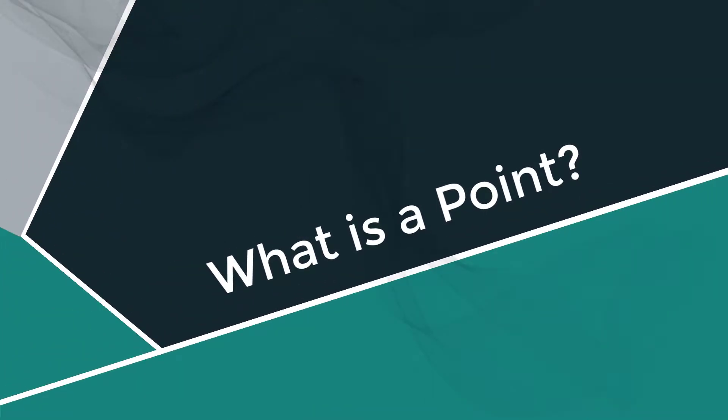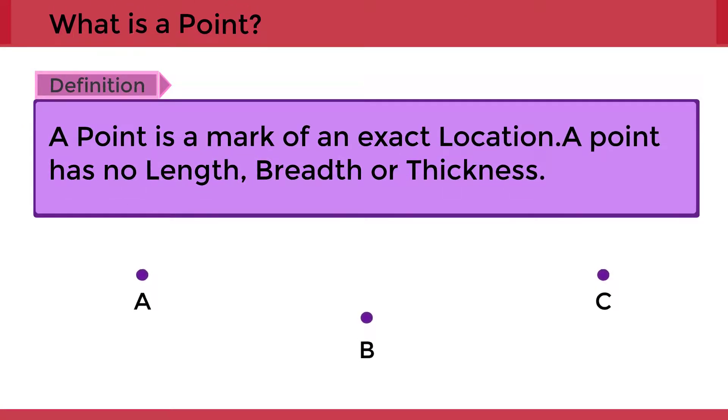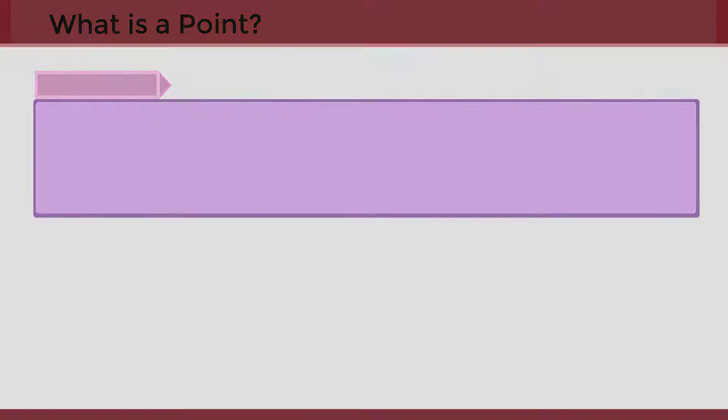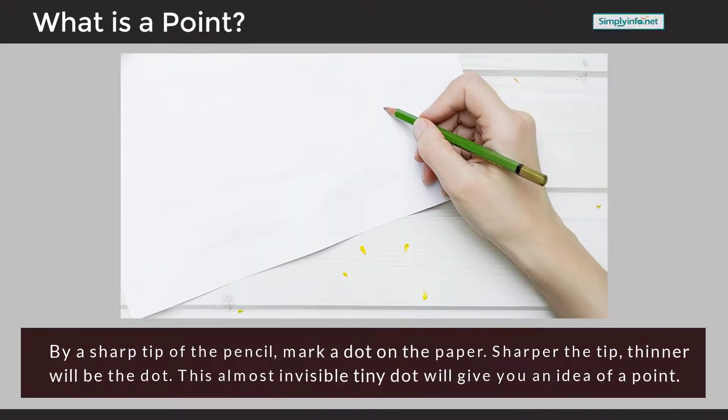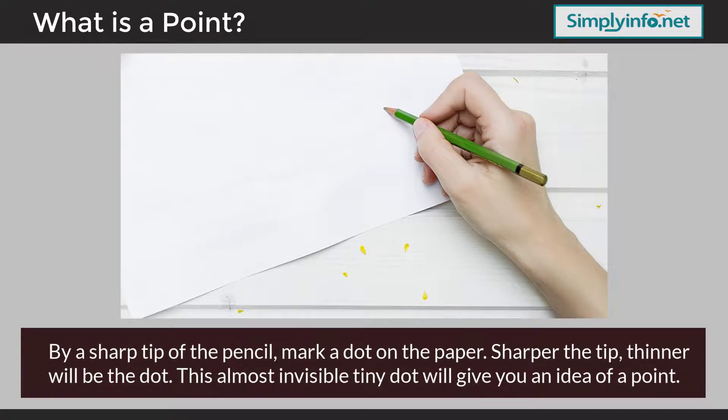What is a point? Definition: A point is a mark of an exact location. A point has no length, breadth, or thickness.